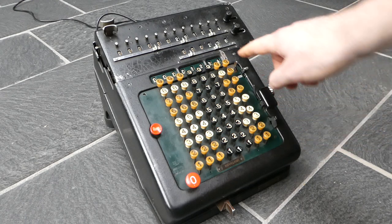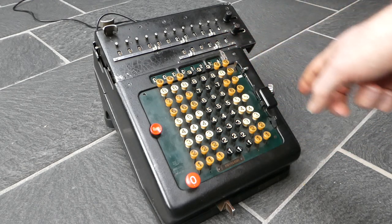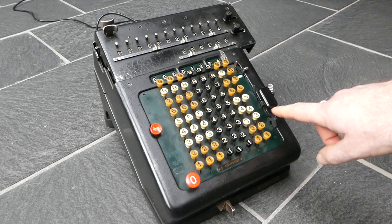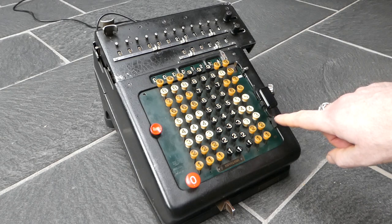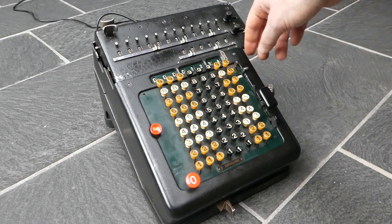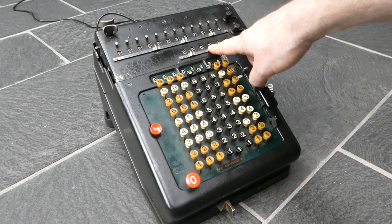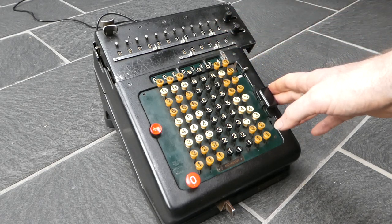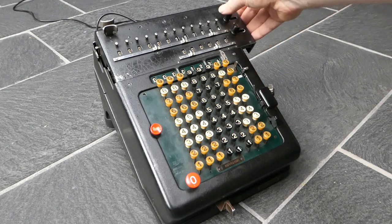If you hold it down a bit too long and went too far, you can undo that addition by pressing this button here. It's missing its key top, but it is the correction button. So that undoes the addition and undoes the increment of the counter. So that's multiplication.